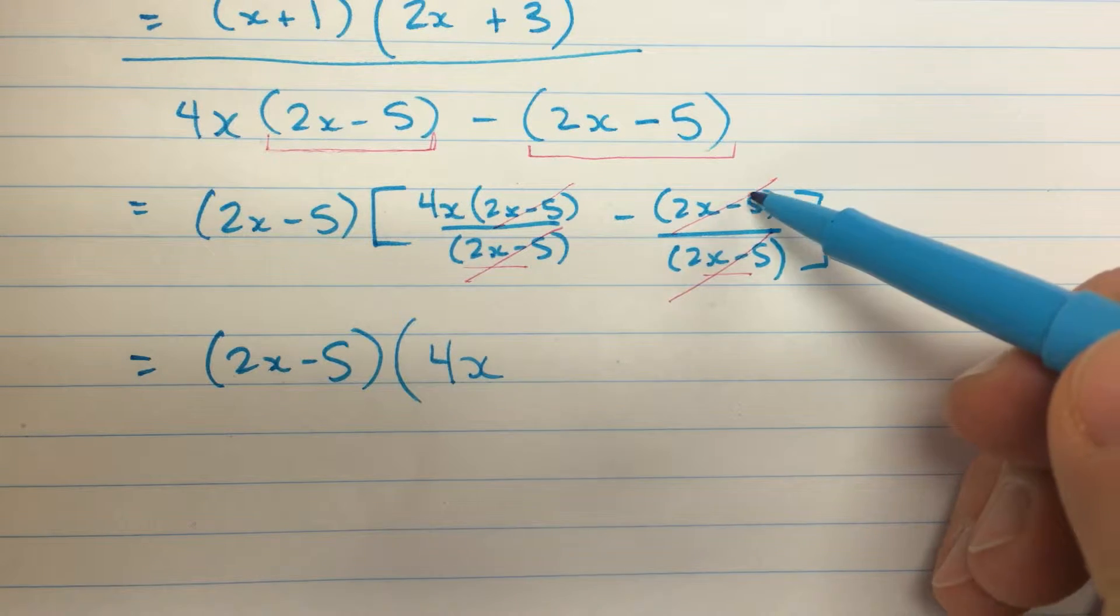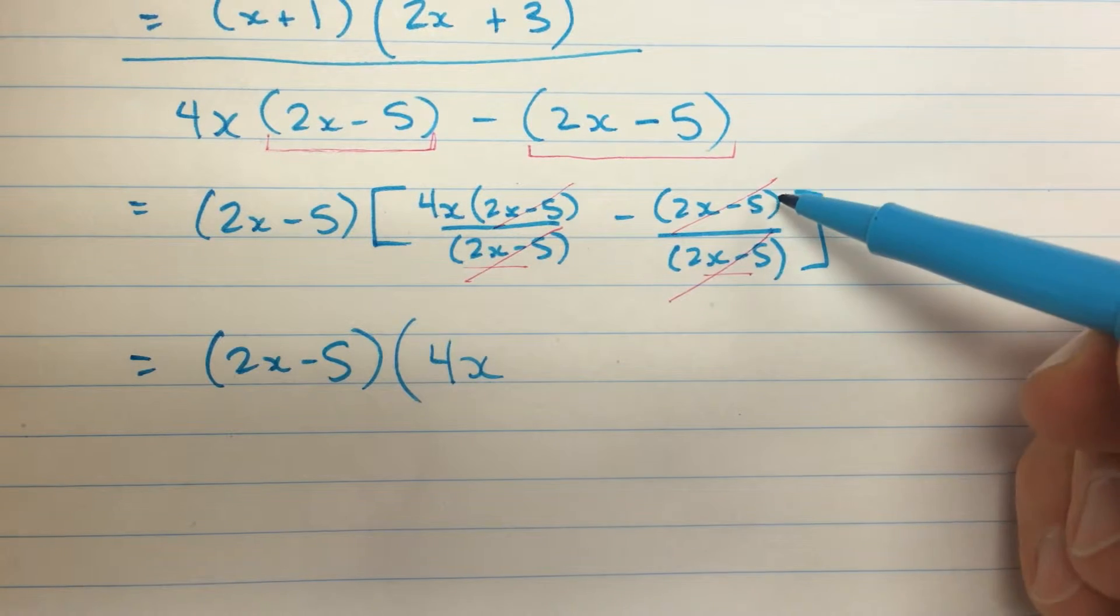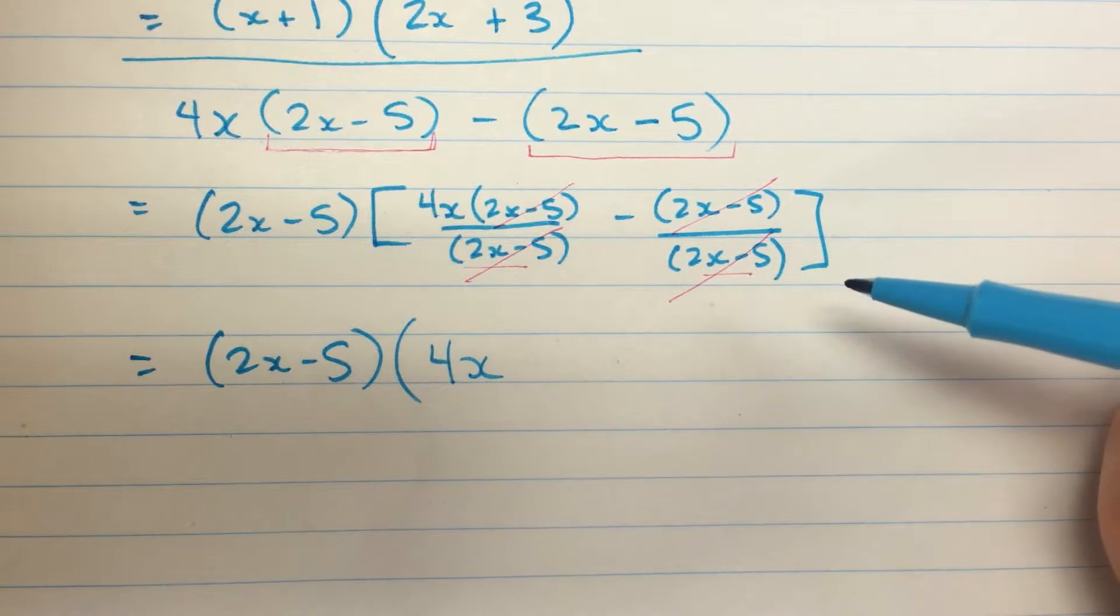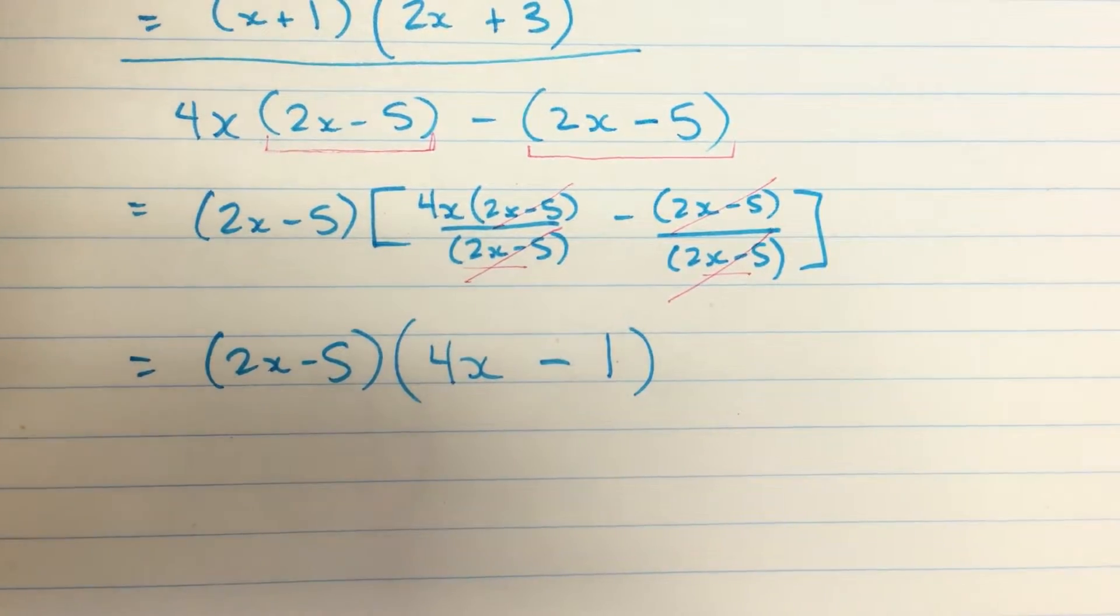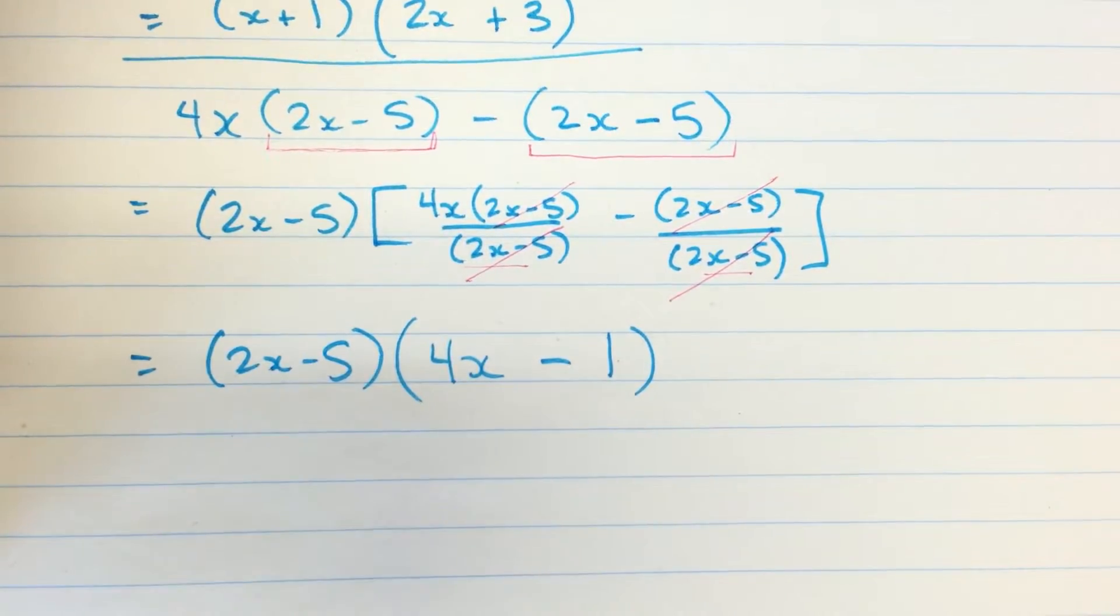And so this is going to be 1. Think of it like a fraction where the numerator and the denominator are the same. We get 1 and it's negative because of the negative sign here. So we've successfully factored that expression.